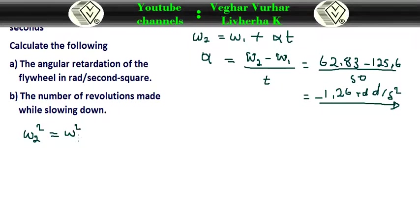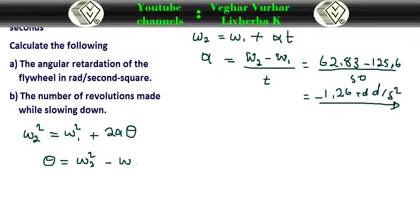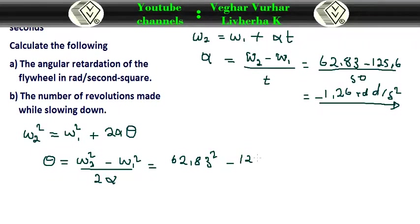For the number of revolutions, we are going to use the same equation of motion. If you are familiar with the equations of motion you can relate this to the linear form. We substitute the final angular velocity, the initial angular velocity, and the retardation value.